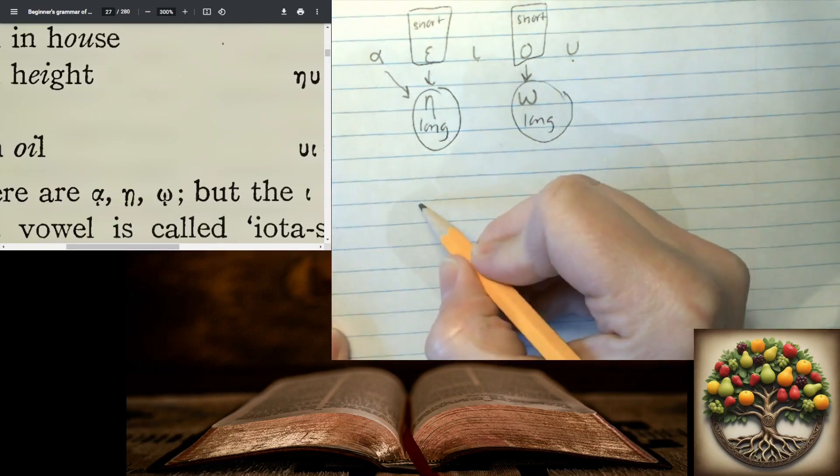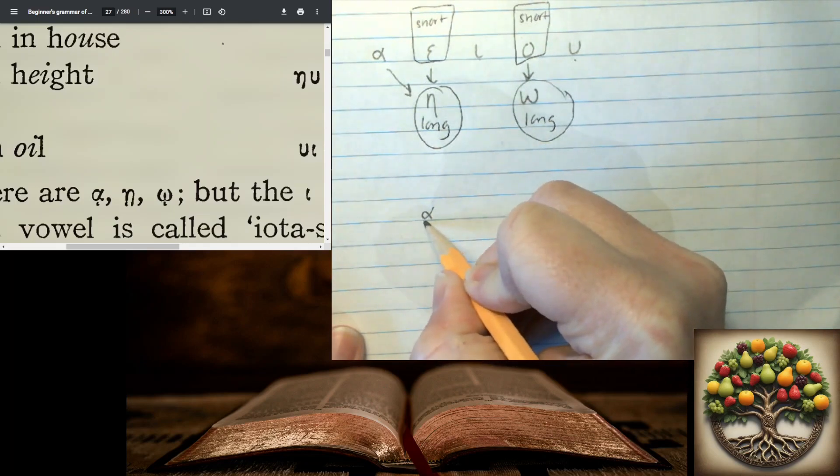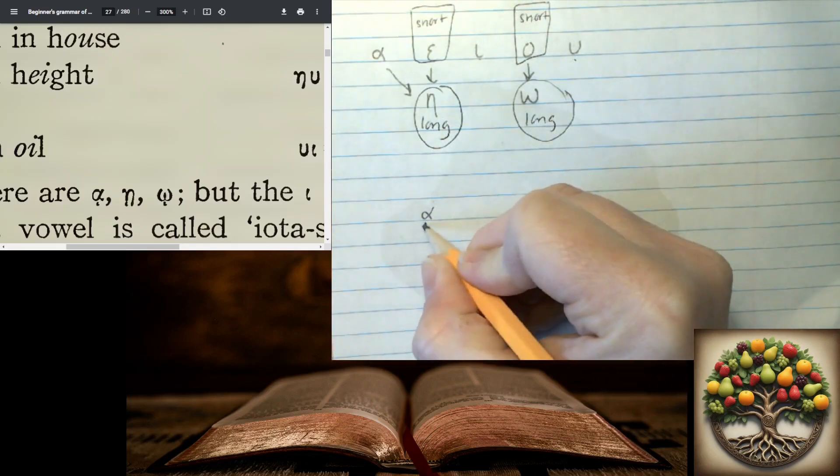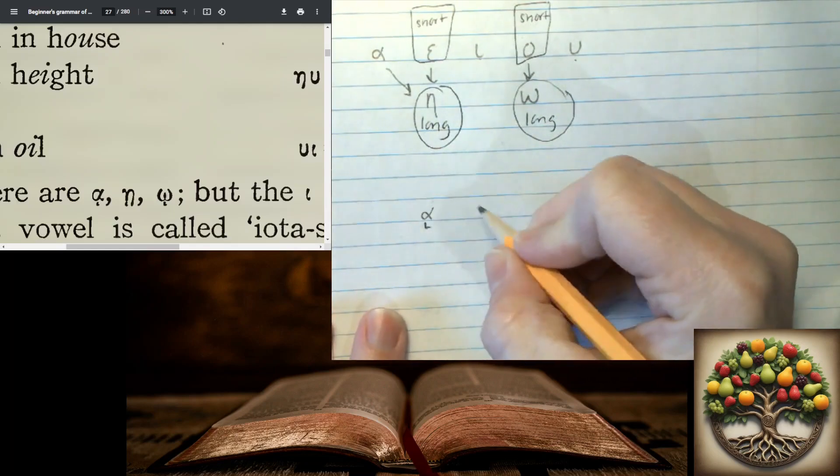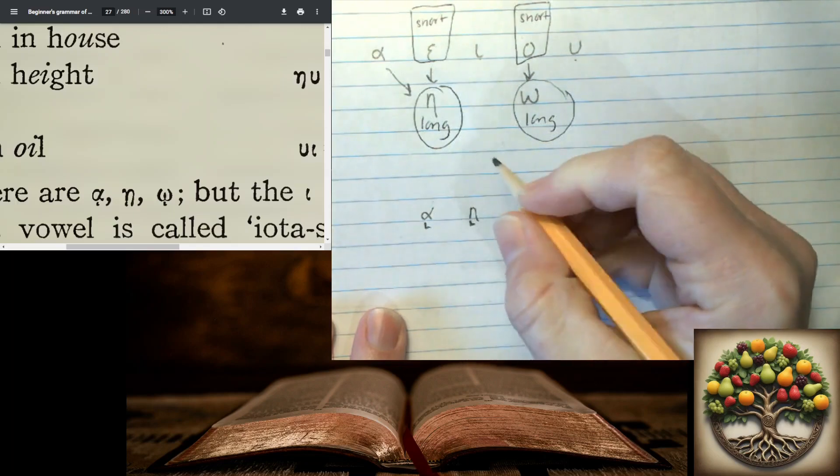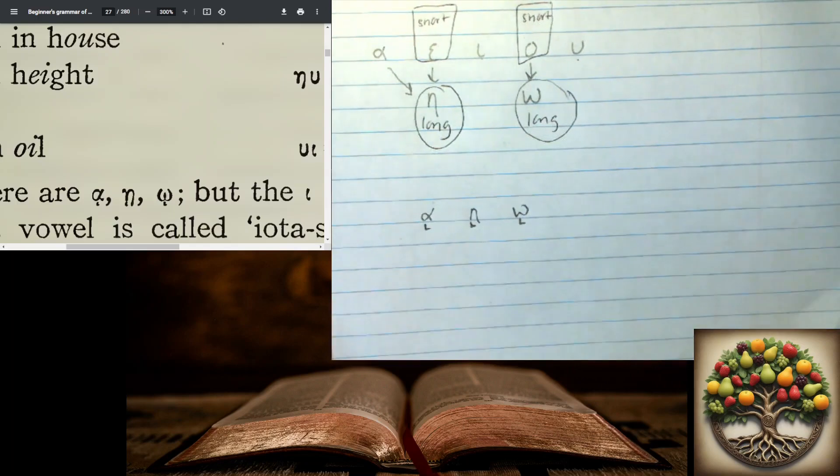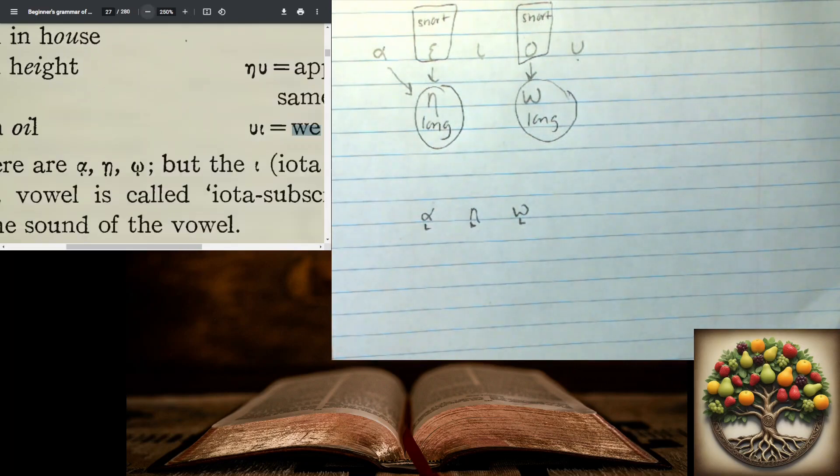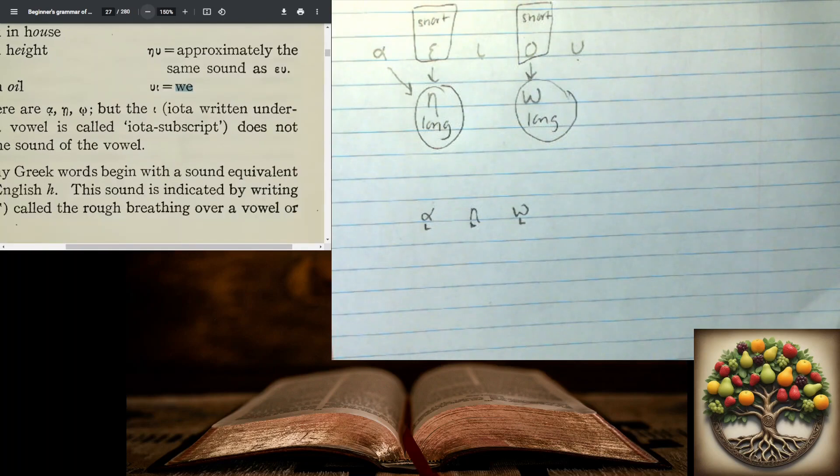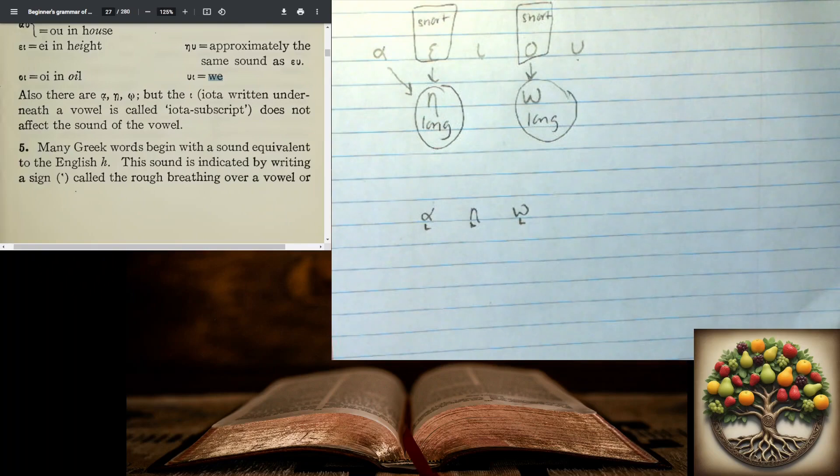So here we have an alpha with an iota subscript. I just make like a corner. It doesn't really look like an i. Here we have an eta with an iota subscript. And the omega with an iota subscript. So those subscripts do not change the sound of the letter. But it's important to know what an iota subscript is.